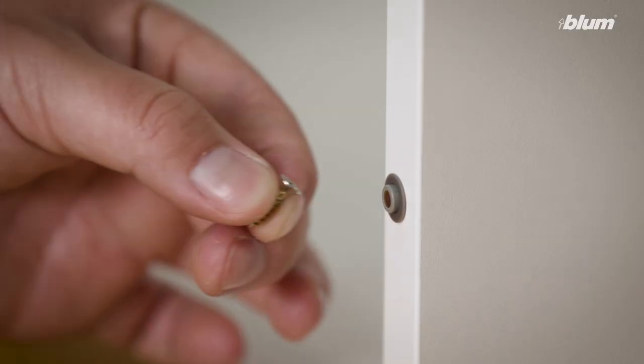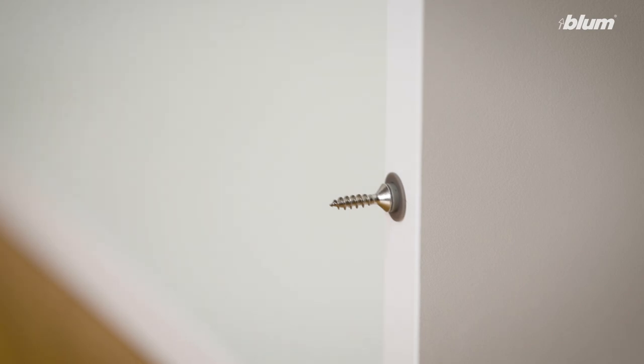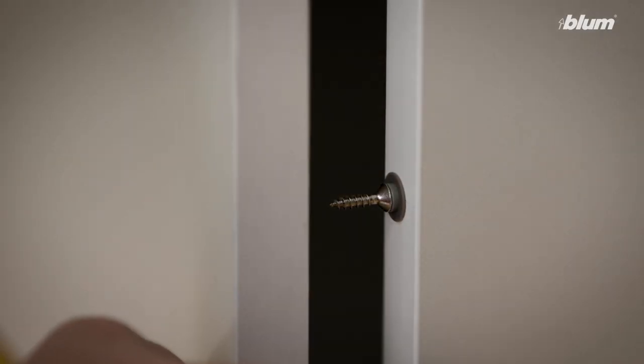For screw-on, simply line the head of your screw onto the magnetic tip of your Tip-On unit. Carefully close the cabinet door so the tip of the screw creates a small indentation on the inside of the door.